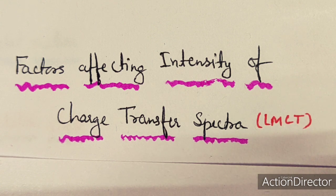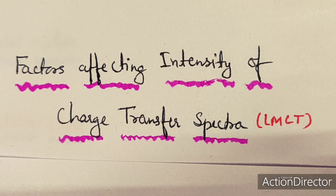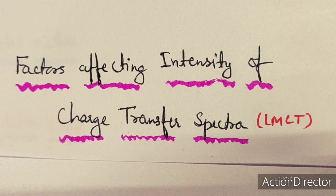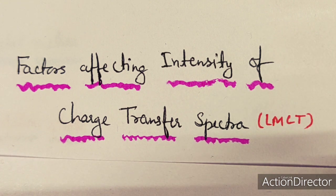The gap between ligand orbitals and metal orbitals affects the intensity of charge transfer. If the gap is more, higher energy will be required for transition. If the gap is less, less energy will be required for the electronic transition. As the gap increases, intensity of the band decreases; if the gap is less, it is easy to transfer electrons from ligand to metal orbital, so intensity increases.